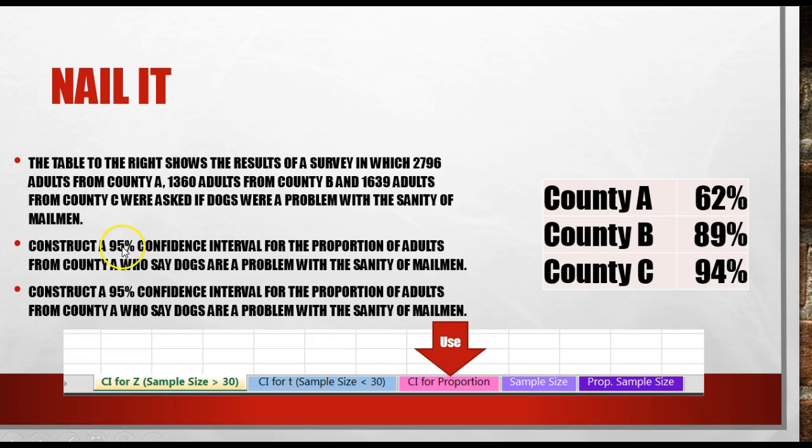First question is construct a 95% confidence interval for the proportion of adults from County A. Second part is construct a 95% confidence interval for the proportion of adults from County B. Oh, it should be County B. I need to switch that. It is beautiful when you can go into a question and change it right in the middle of a recording. So I fixed that.